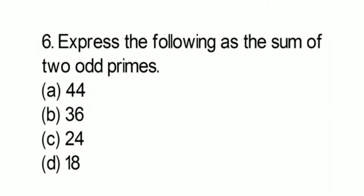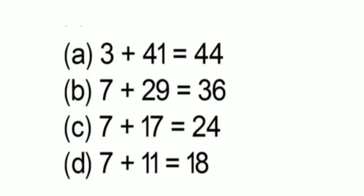Question number 6: express the following as the sum of 2 odd primes — 44, 36, 24 and 18. So: 44 = 3 + 41; 36 = 7 + 29; 24 = 7 + 17. Remember, we have to write odd prime numbers here. 7 + 17 = 24. And 18 = 7 + 11.